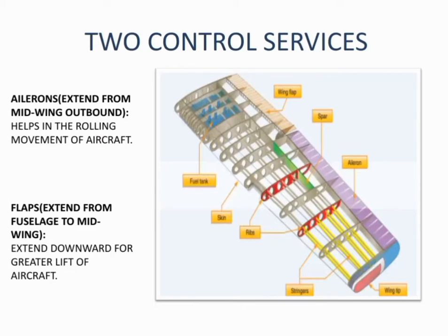There are two control surfaces on the wing which help in flying. The first is ailerons and the second is wing flaps. Ailerons extend from mid-wing to outboard and help in the rolling movement of the aircraft. Flaps extend from the fuselage to mid-wing, extend downward for greater lift, and help in flying.